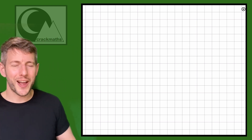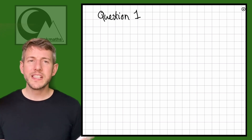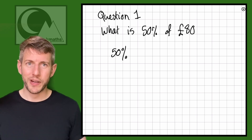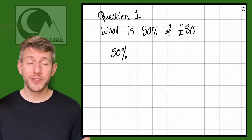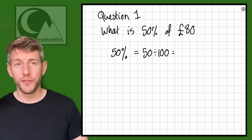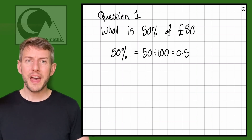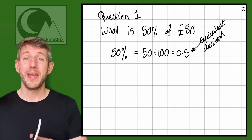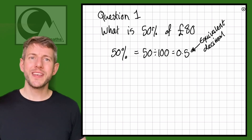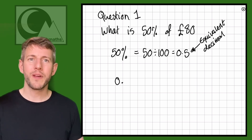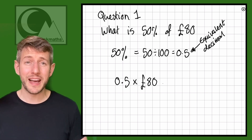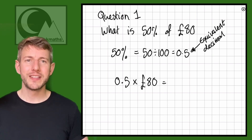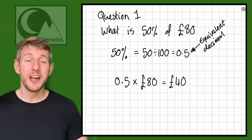Let's look again at question one: what is 50% of £80? 50% has an equivalent decimal — we find it by doing 50 divided by 100, which equals 0.5. So 50% is equivalent to 0.5. Now we use 0.5 to multiply our amount: 0.5 × £80 = £40.